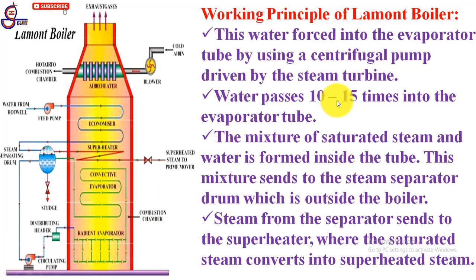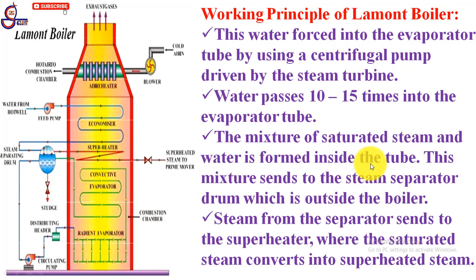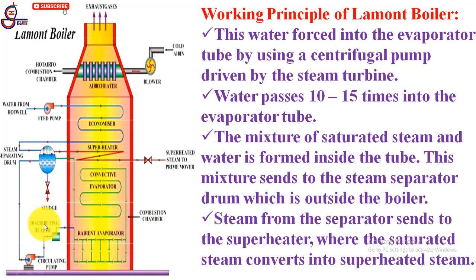Water passes 10 to 15 times through the evaporator tube. The mixture of saturated steam and water is formed inside the tube. This mixture is sent to the steam separator drum, which is outside the boiler, containing a mixture of saturated steam and water particles.